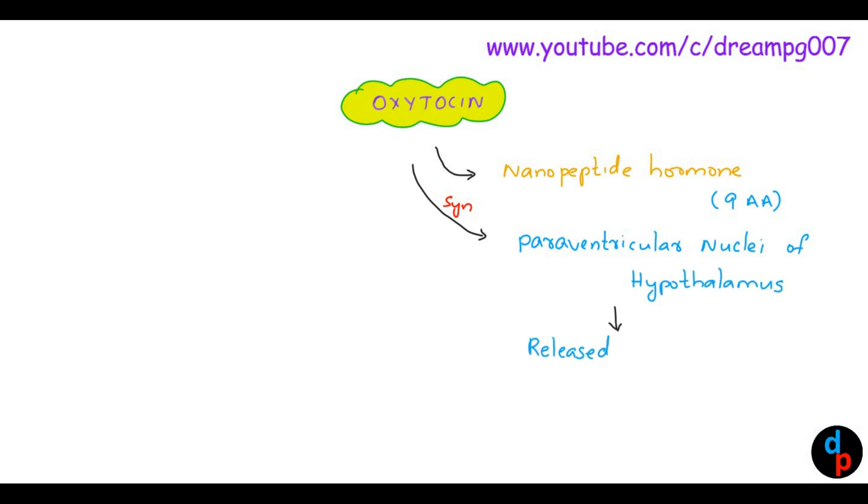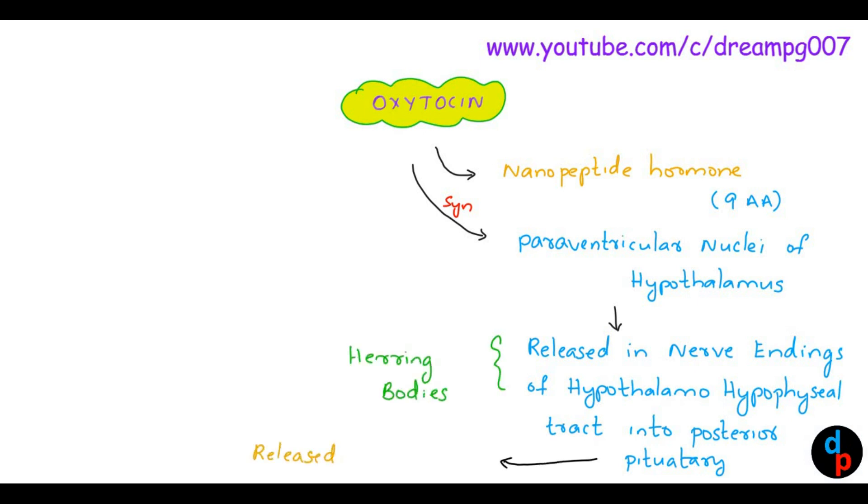From the hypothalamus it is released in nerve endings of hypothalamohypophyseal tract into the posterior pituitary gland. These nerve endings are called Herring bodies. From the posterior pituitary gland it is released into the free circulation.